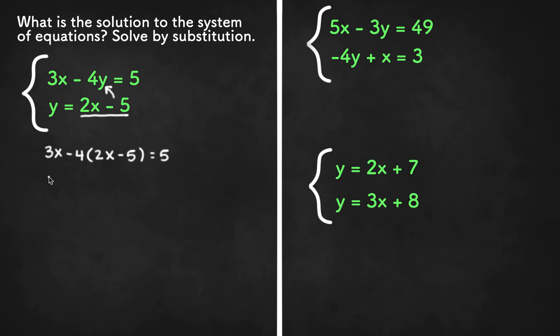Now we need to distribute the negative 4 so we get 3x then negative 4 times 2x or negative 8x and negative 4 times negative 5 or plus 20 equals 5. Now we can combine like terms so we have 3x minus 8x or negative 5x plus 20 equals 5. Now we can subtract both sides by 20 and we get negative 5x equals 5 minus 20 or negative 15.